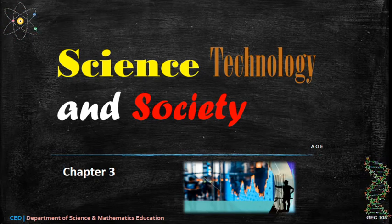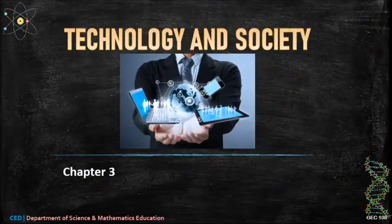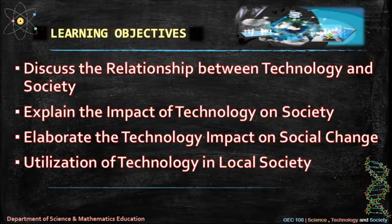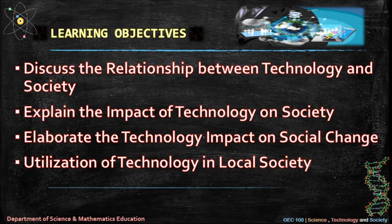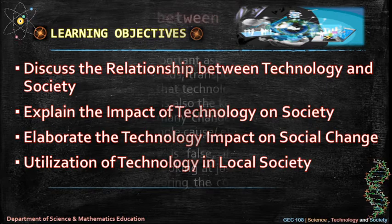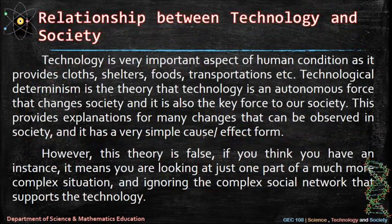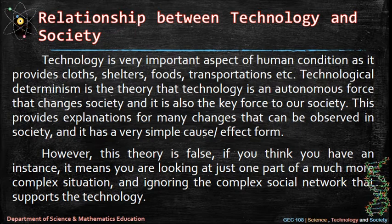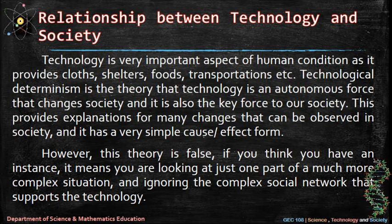Science, Technology and Society — Chapter 3: Technology and Society. Learning objectives: first, discuss the relationship between technology and society; second, explain the impact of technology on society; third, elaborate the technology impact on social change; fourth, utilization of technology in local society. Technology is a very important aspect of human condition as it provides clothes, shelters, food, and transportation. Technological determinism is the theory that technology is an autonomous force that changes society and is also the key force to our society.